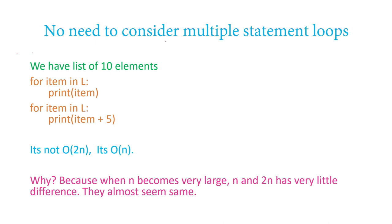Now there are some important points. There is no need to consider multiple separate loops when calculating Big O. For example, suppose you have a list of 10 elements. You print each item in one loop, and then there's another loop where you add 5 to all items. What is the total time complexity? You might think it's order of N plus order of N, making it order of 2N. No — it is simply order of N.